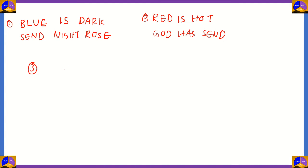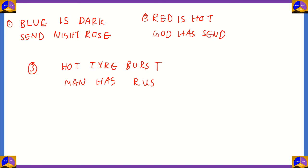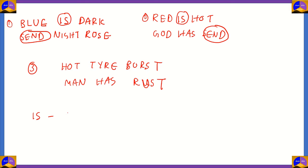This is a question on coding and decoding, so we write the intended message and then the code. The last intended message is 'hot tire burst' and its code is 'man has rust'. Now we need to find common words in two or more messages. If you look at the first and second message, the word 'is' is common, and the code word common to both codes is the word 'scent'. Therefore, 'is' in the message corresponds to the code word 'scent'.